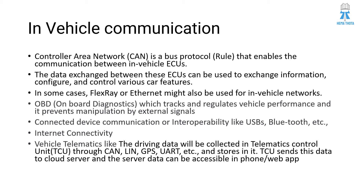ECUs communicate by passing information, sending control signals to each other, or forming a feedback loop. In some cases, FlexRay or Ethernet may also be used for in-vehicle networking. OBD — On-Board Diagnostics — tracks and regulates vehicle performance and prevents manipulation by external signals.